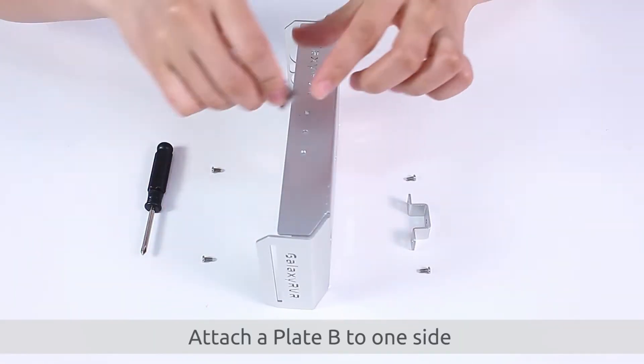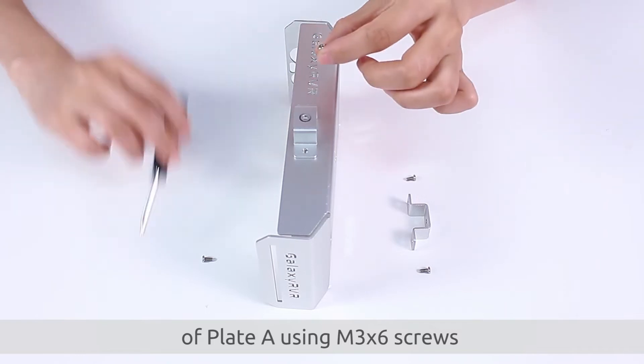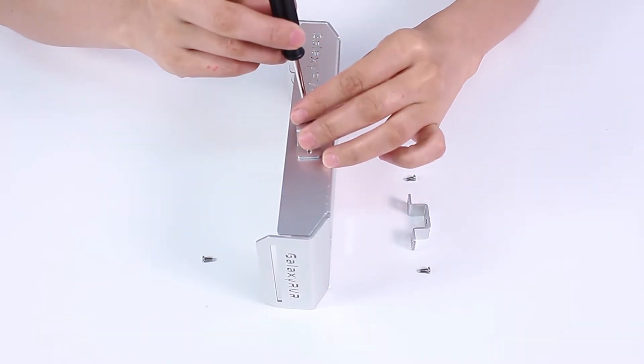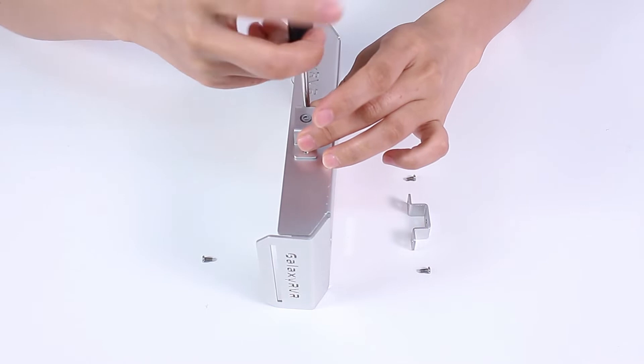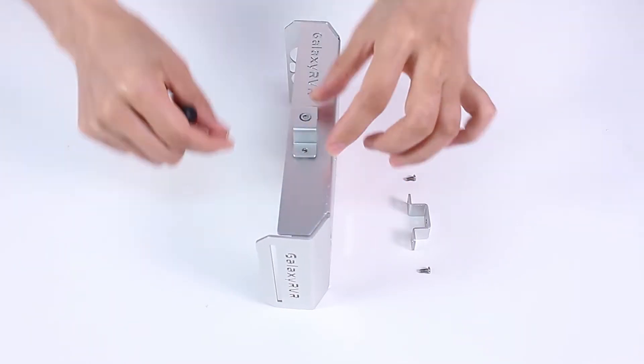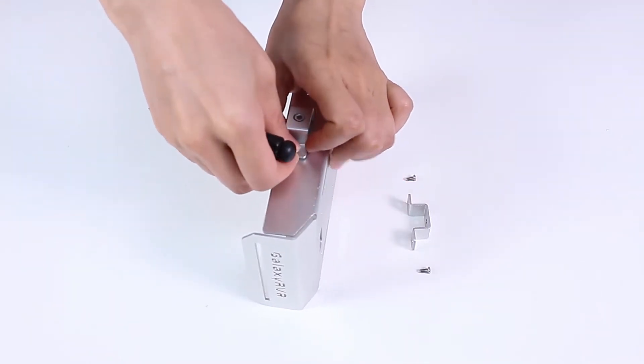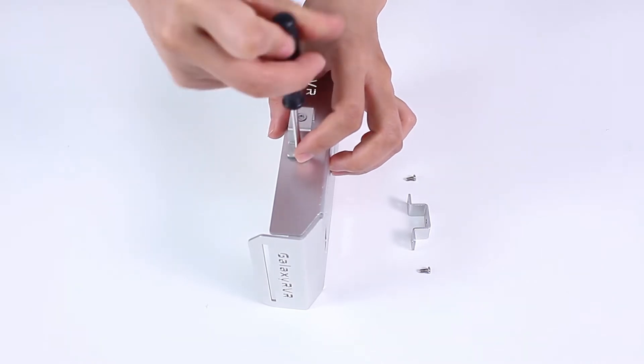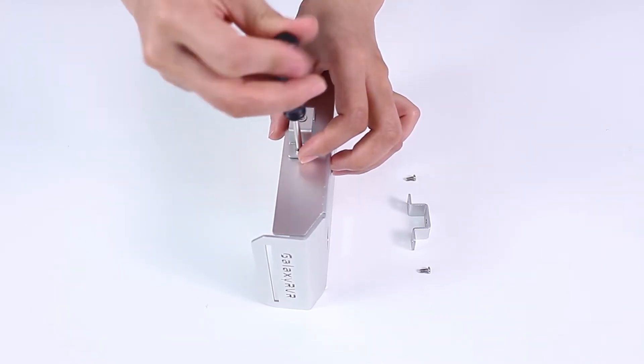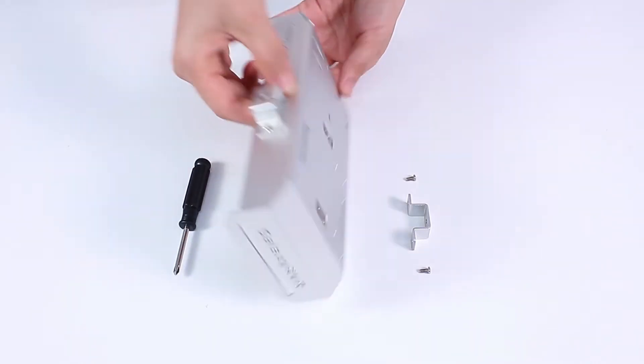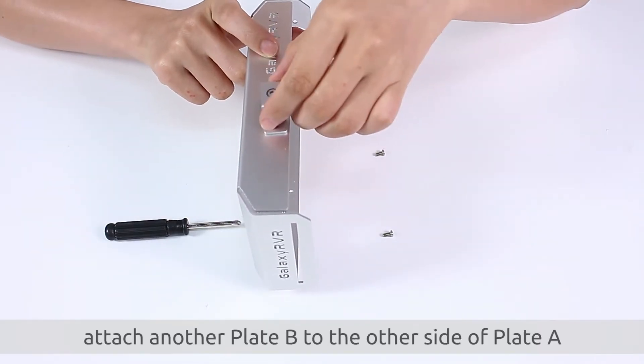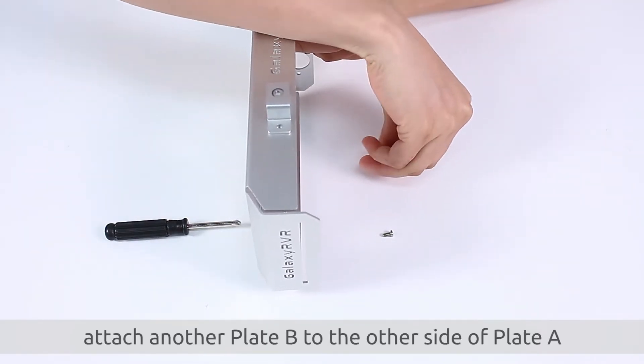Attach a plate bead to one side of plate A using M3 x 6 screws. Similarly, attach another plate bead to the other side of plate A.